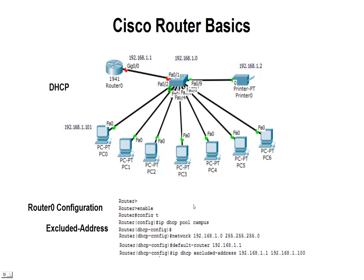Next we're going to exclude some addresses. Why do we exclude addresses? We might have a printer or a server in this network, and we don't want to feed it DHCP IP addresses automatically, because we want to know what IP address those devices are going to be permanently assigned to. For the printer, we'll assign 192.168.1.2. We need to exclude that and maybe a few more in case we have other devices. I've excluded quite a few — from 192.168.1.1, which is the default gateway, all the way to 100. So from 1 to 100, these will be excluded from the pool, reserved for other devices.